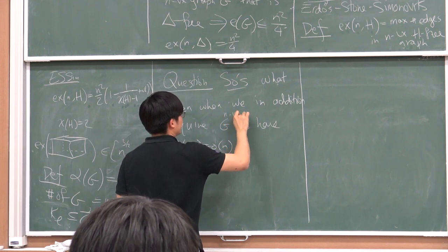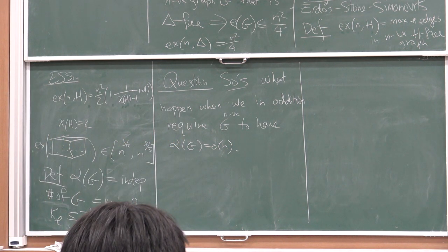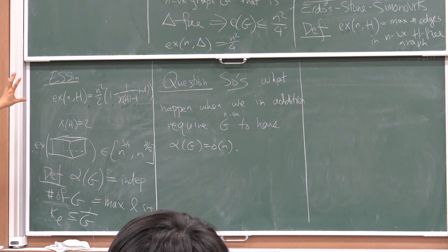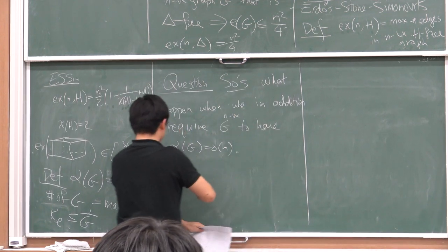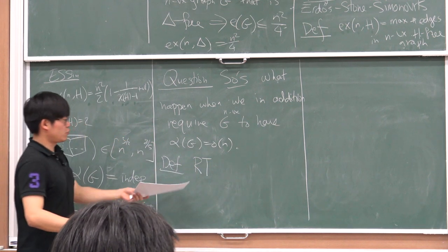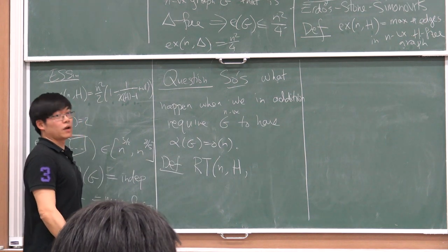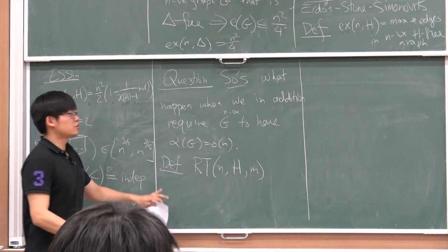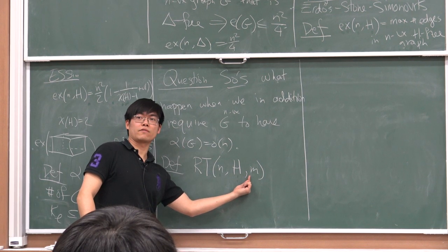How does imposing small independence number affect the edge density? Let me give a formal definition. We define RT(n, H, m) - the Ramsey-Turán number - as the maximum size of an n-vertex graph without H as a subgraph and with independence number at most m. The key case is when m = o(n). The intuition is: when m is large (close to n), the problem is more Turán-like; when m is small, more Ramsey flavor kicks in.